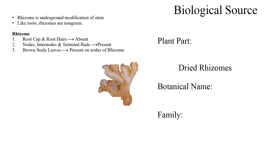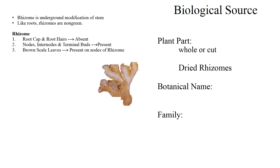Coming to the plant part. As per the Indian Pharmacopoeia, the plant part used in case of ginger is whole or cut, scrapped or non-scrapped dried rhizome.